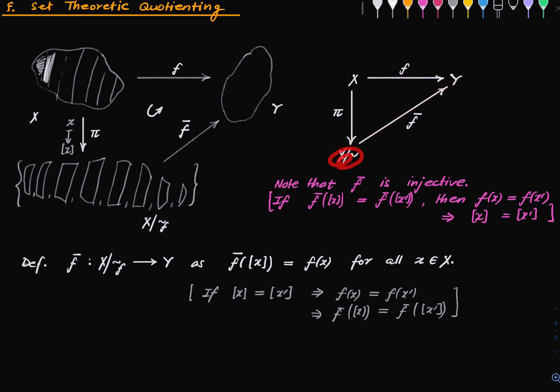So this set gets embedded inside Y, if that makes sense. This is your basic set-theoretic quotienting. We can say a little bit more.